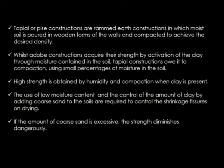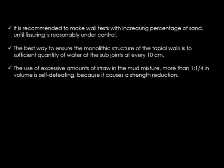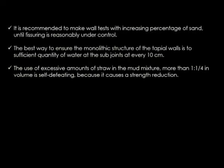The high strength is obtained by humidity and compaction when clay is present. The use of low moisture content and the control of the amount of clay by adding coarse sand to the soils are required to control shrinkage fissures on drying. If the amount of coarse sand is excessive, the strength diminishes dangerously. It is recommended to make wall tests with increasing percentage of sand until fissuring is reasonably under control. The best way to ensure monolithic structures of the tapial wall is to add sufficient quantity of water at subsequent joints at every 10 centimeters. The use of excessive straw in the mud mixture — more than 1 to 1.1 by volume — is self-defeating as it causes a strength reduction. The amount of straw should be reduced to 0.25 to 1 in volume to help make it stronger; exceeding that, the strength will considerably reduce.